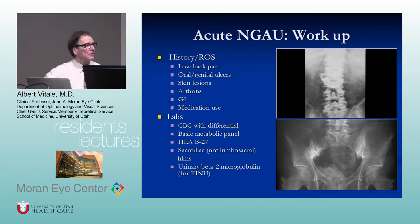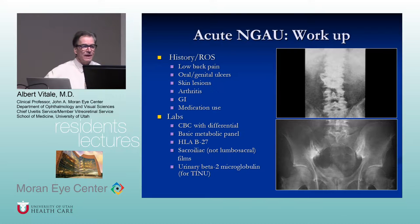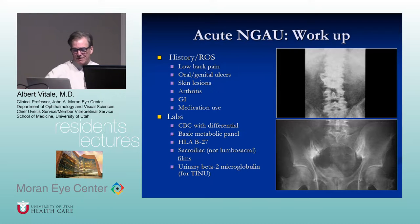Labs can be tailored. CBC, differential, and metabolic profile may or may not be indicated. For HLA-B27, in a patient with lower back pain, about 50% of patients are positive for B27, and a very high percentage of those may have an underlying spondyloarthropathy.